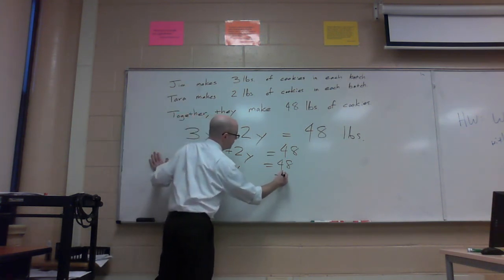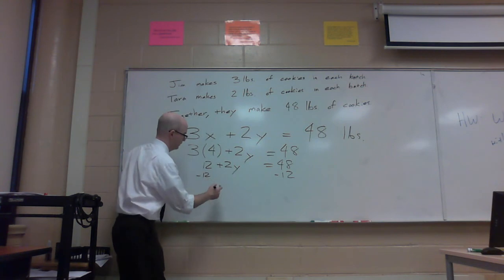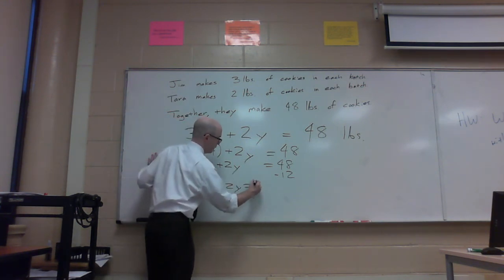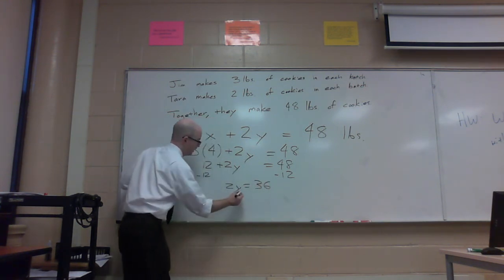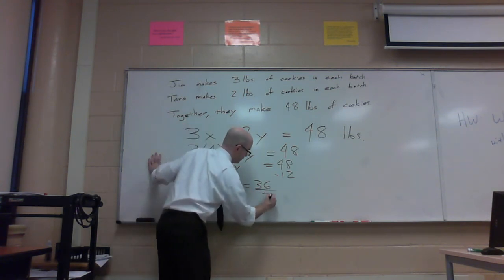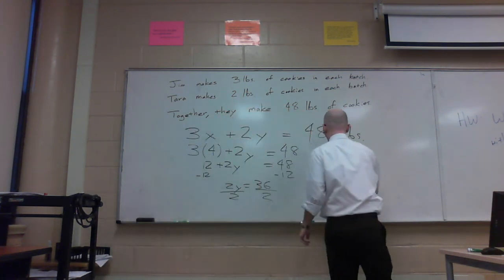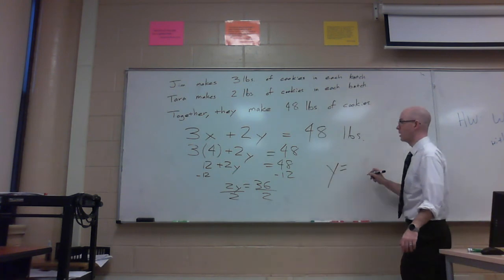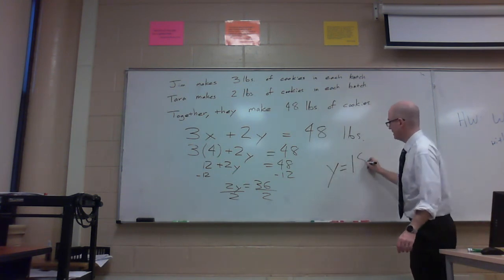Subtract Jim's cookies from both sides, you're left with 2y equals 36. Divide that by 2, and then the number of batches that Tara made is 18.